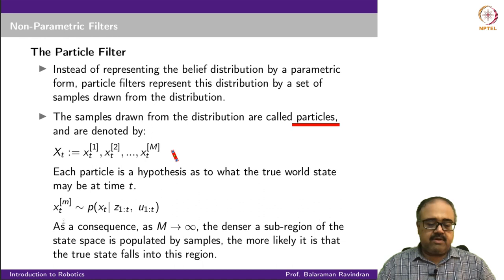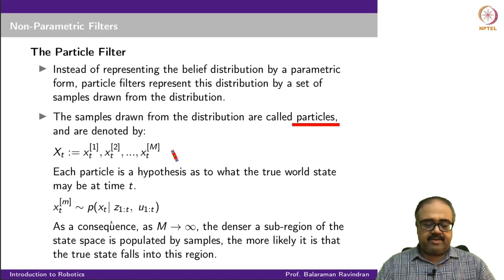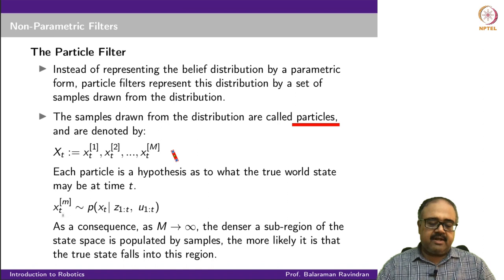A particle at time t is sampled from the distribution P(x_t | z_{1:t}, u_{1:t}) — all the observations and actions from the beginning of time until time t. This expression is essentially the belief state: where do I believe I am at time t? The set of particles are sampled from our belief state at time t.